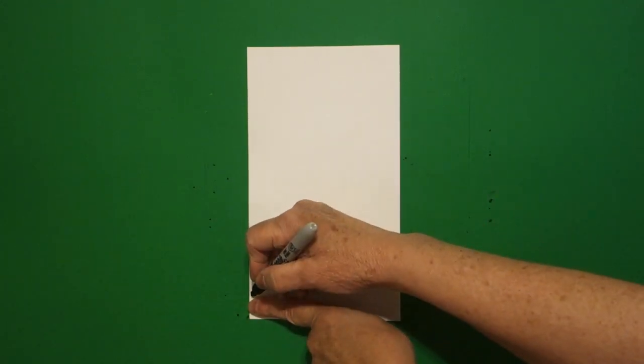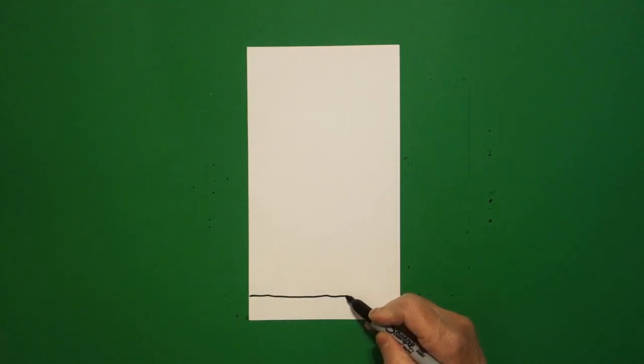I take one finger at the bottom and I put a dot and from that dot I'm going to draw a slightly wavy line over to the right hand side.